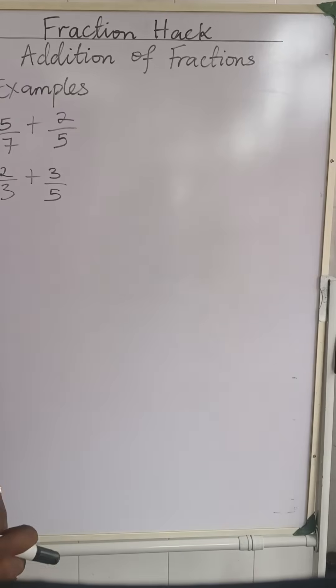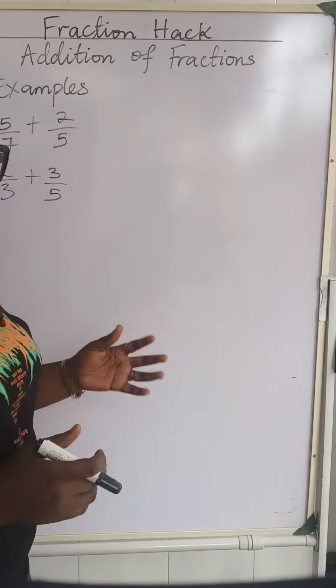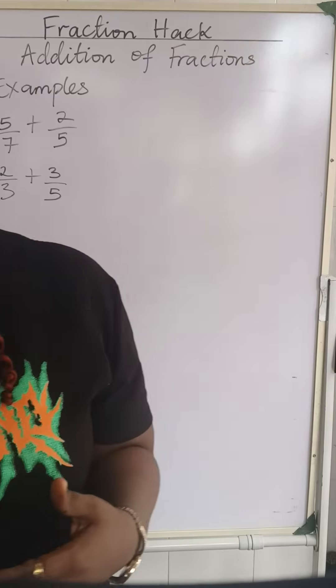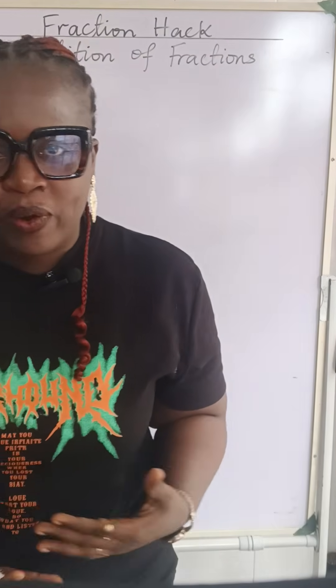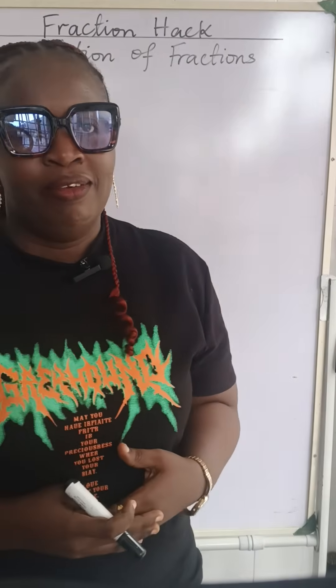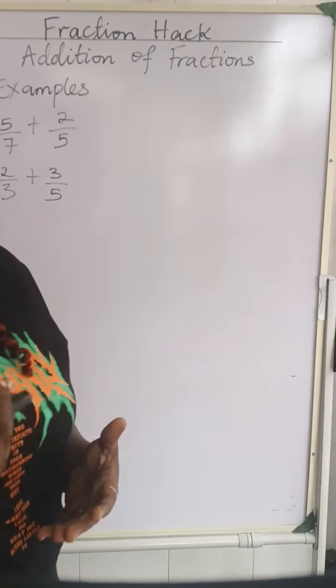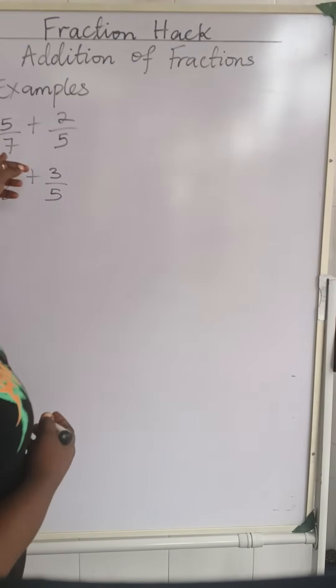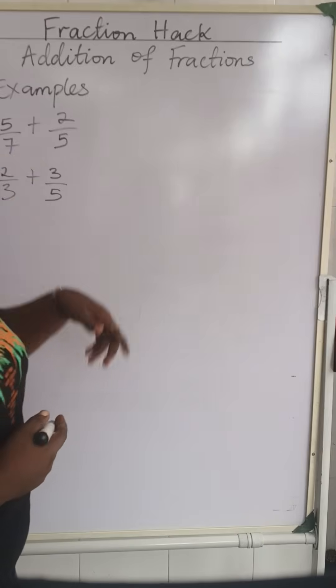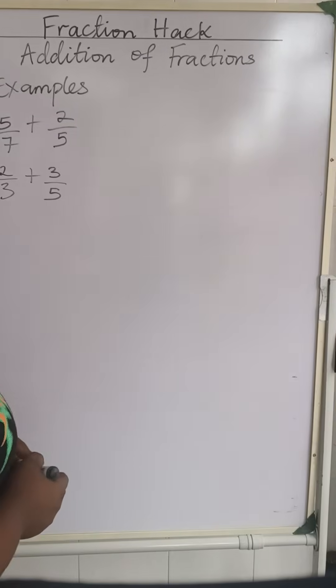Let's look at these two examples on the board. Before I give you the hack, we are going to first solve it the right way, then the hack. Because of our objective questions, you will tell me which one you would rather do. Now let's look at 5 over 7 plus 2 over 5. We want to add the two.